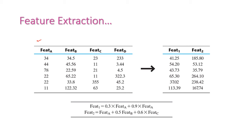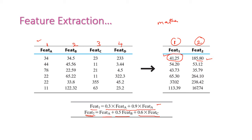Let us see another example. In our dataset, we are having four features: Feature A, Feature B, Feature C, and Feature D. From these four features, we need to extract two additional features: Feature 1 and Feature 2. The formula for Feature 1 is: Feature1 = 0.3 × FeatureA + 0.9 × FeatureA. The formula for Feature 2 is: Feature2 = FeatureA + 0.5 × FeatureB + 0.6 × FeatureC. We are extracting new features by applying these mathematical functions.